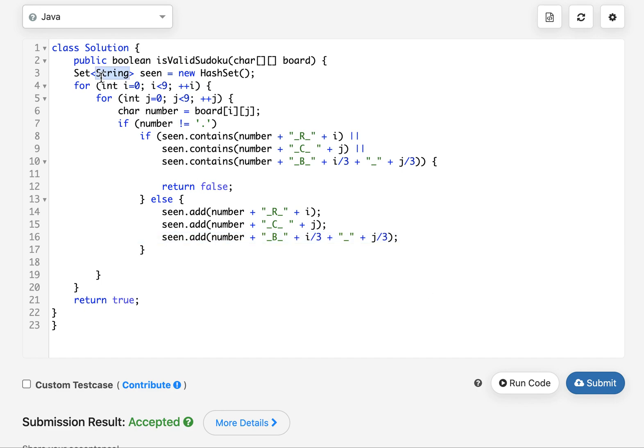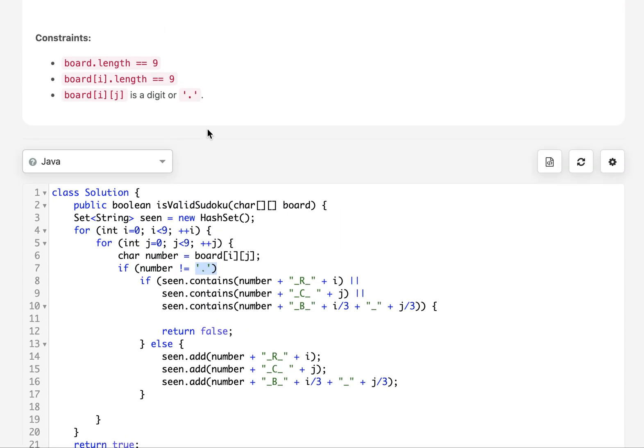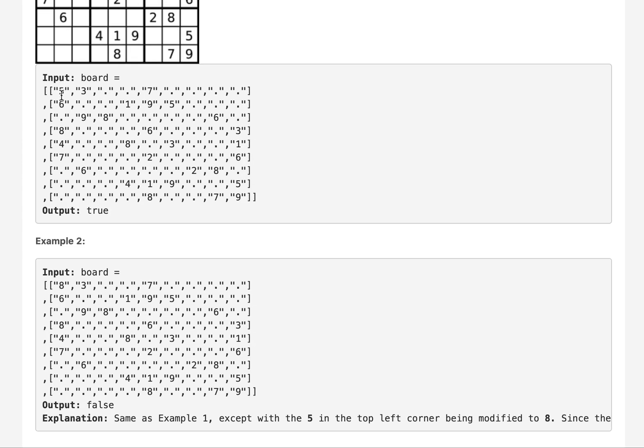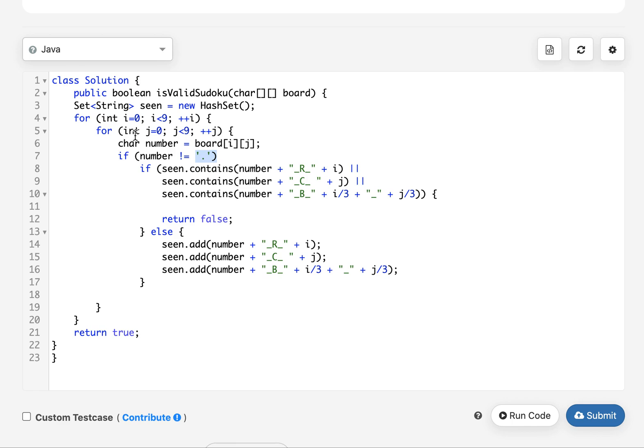Let's move on to the coding section. The first thing that I have done is to define a set that will store all the visited or seen entries. Then we will iterate over the input matrix that is given to us. I'll extract the number. If the current number is not equal to dot, that means it's a valid entry in the matrix in the form of a number starting from 1 till 9.